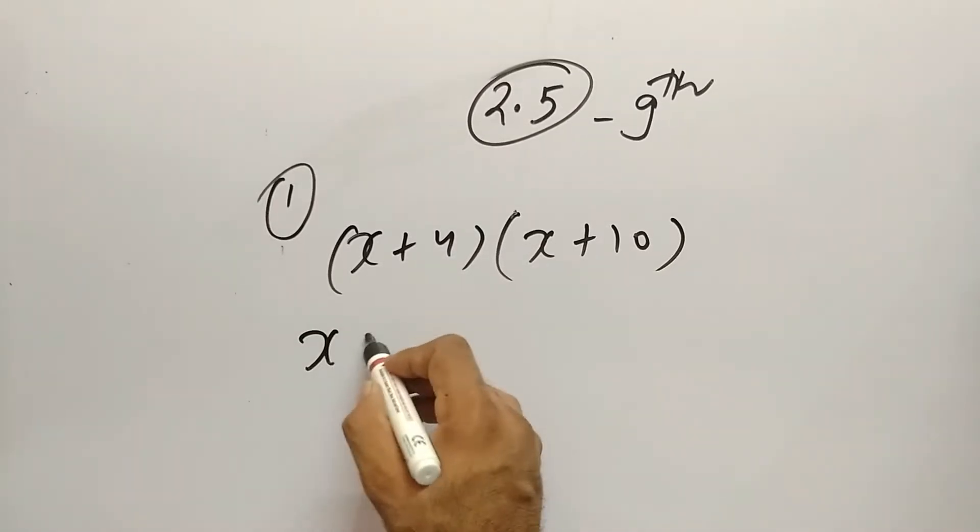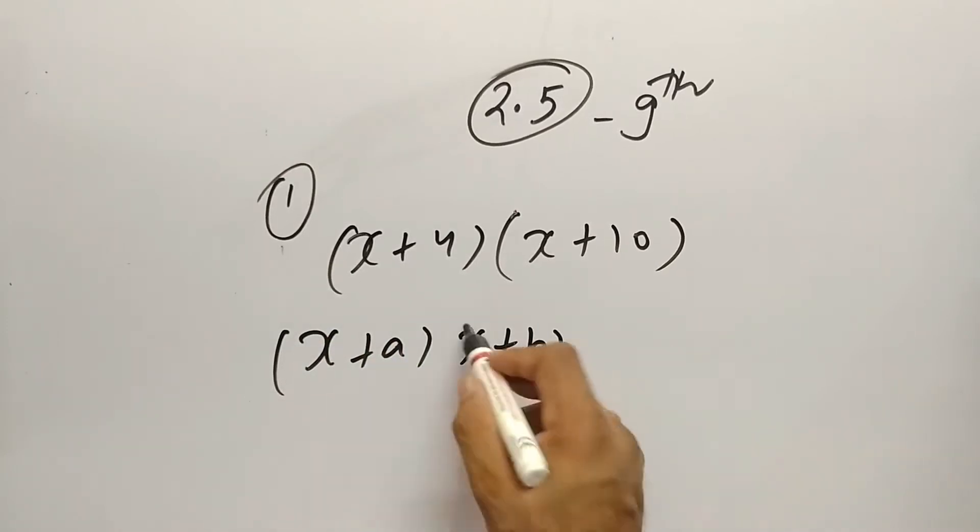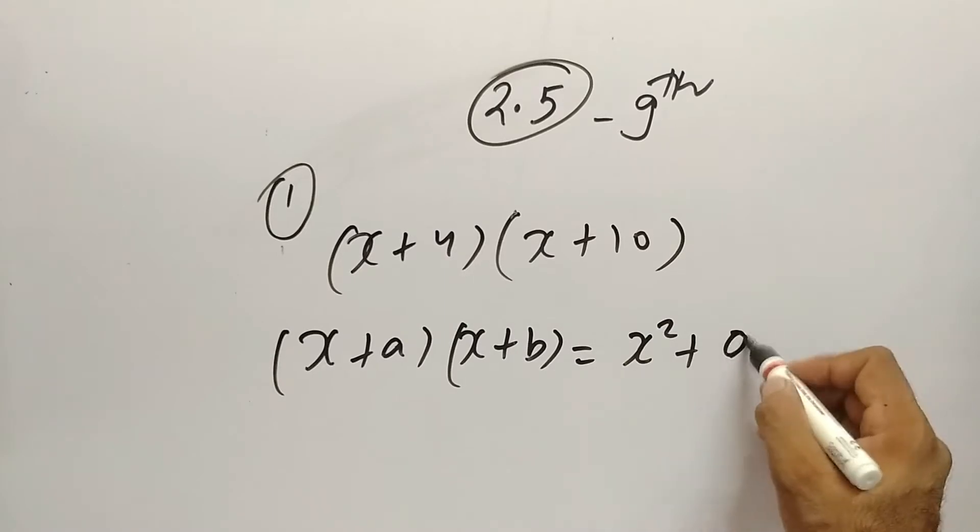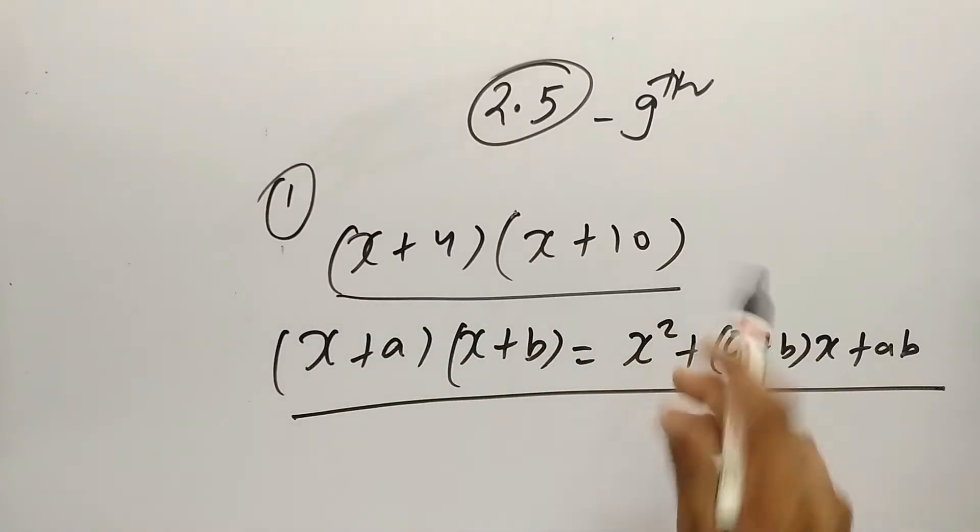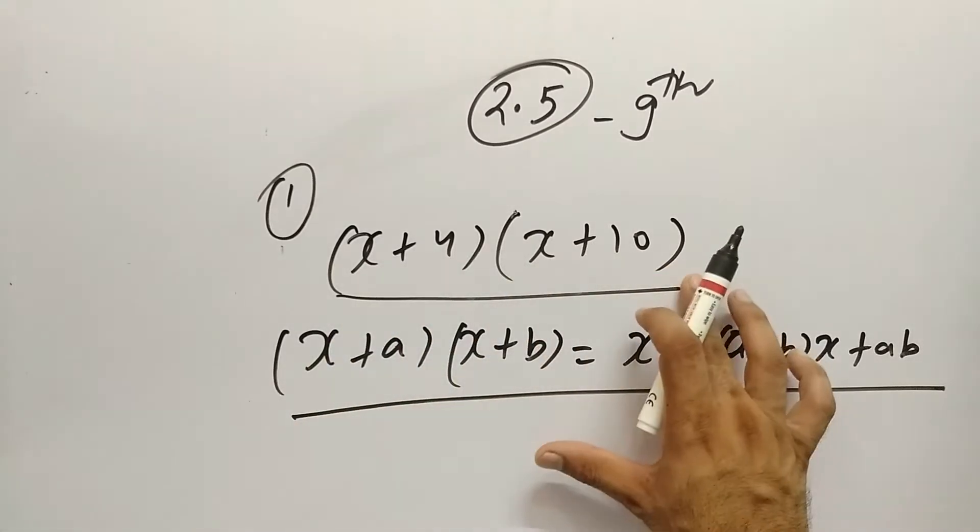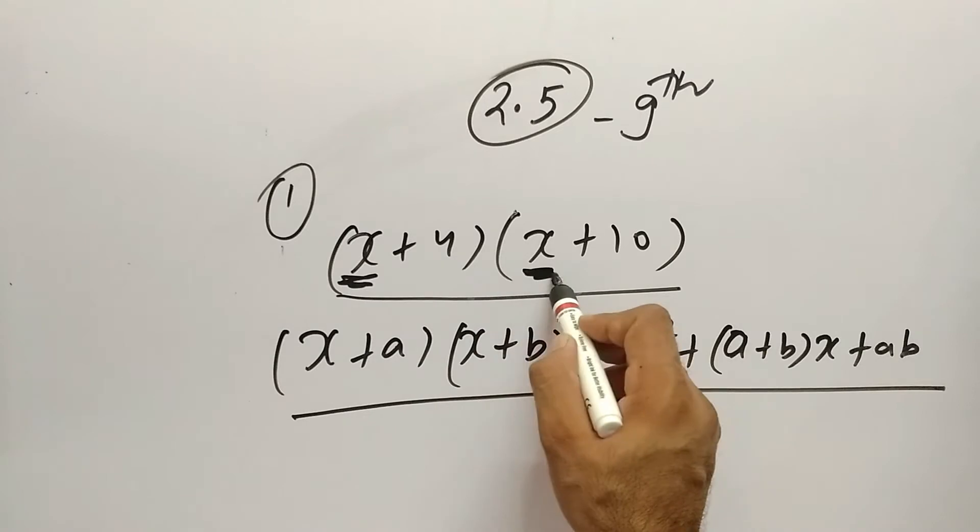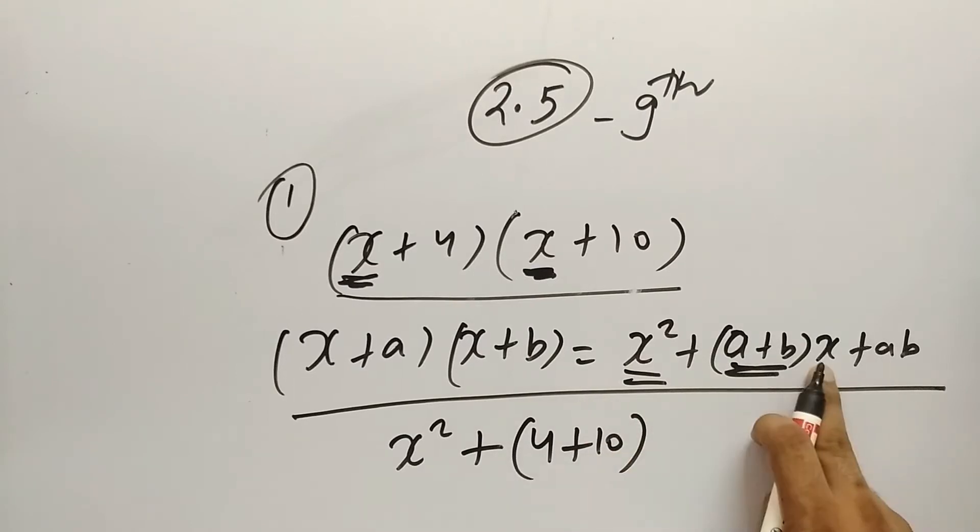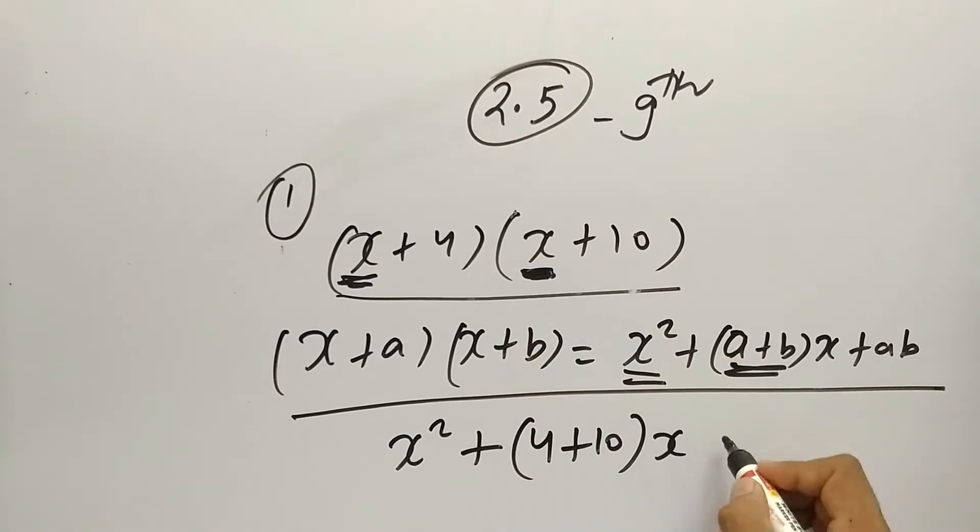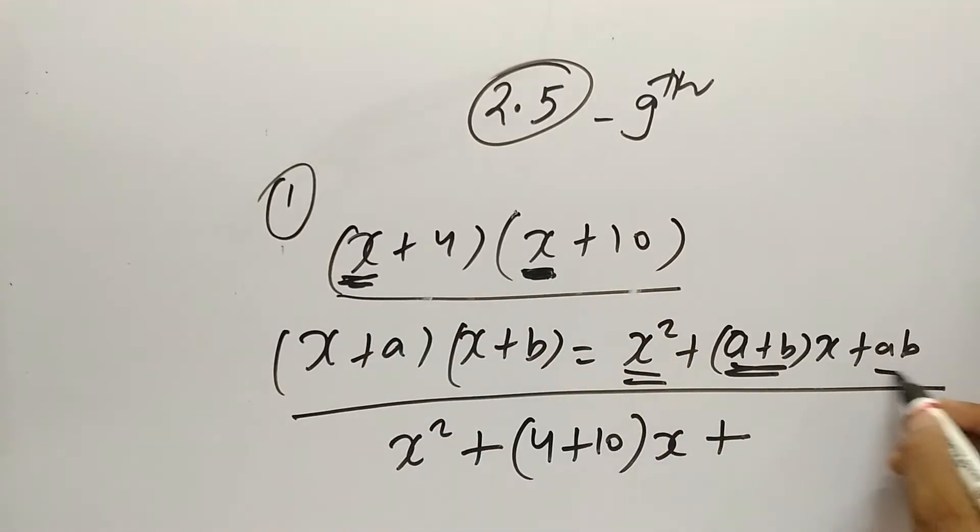So the identity we will use is (x+a)(x+b) = x² + (a+b)x + ab. We will use this identity to find the value. Now (x+4)(x+10), where a is 4 and b is 10. So x² + (4+10)x, that is 14x, plus 10 times 4, which is 40. So the answer will be x² + 14x + 40.